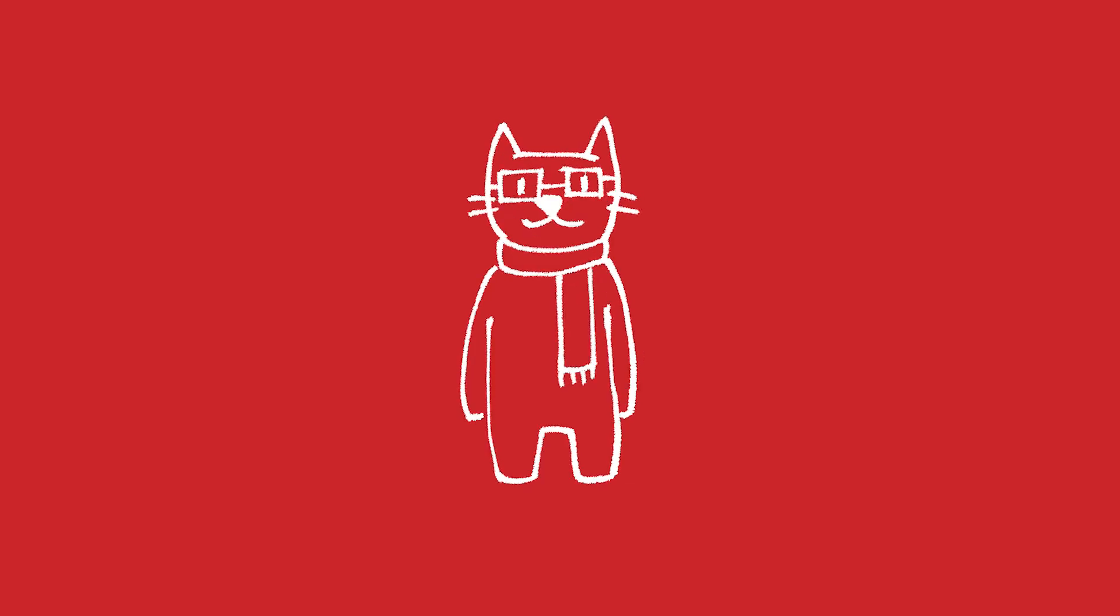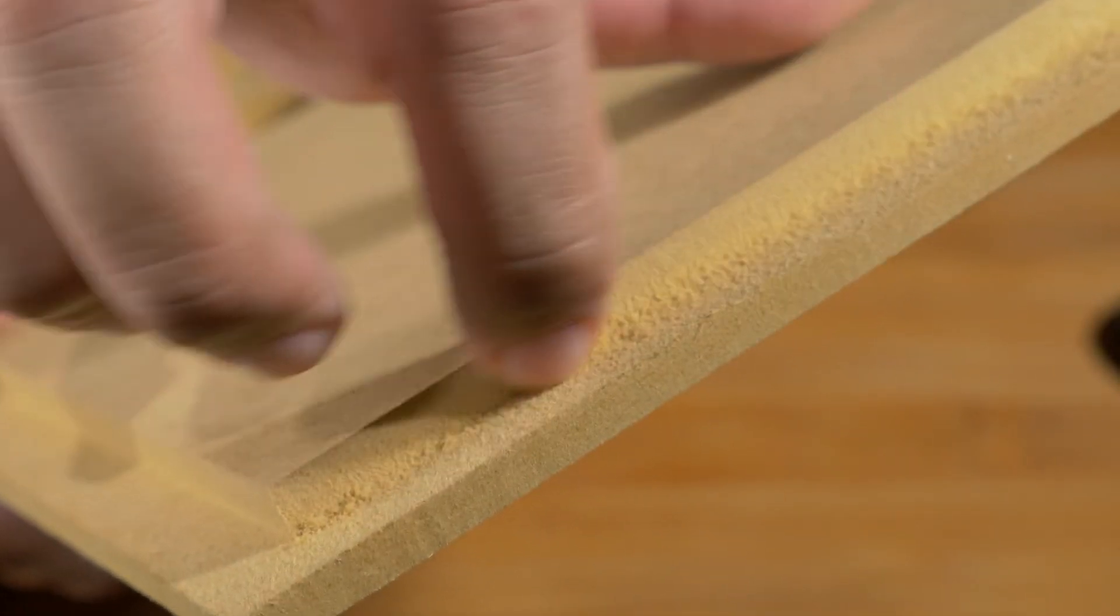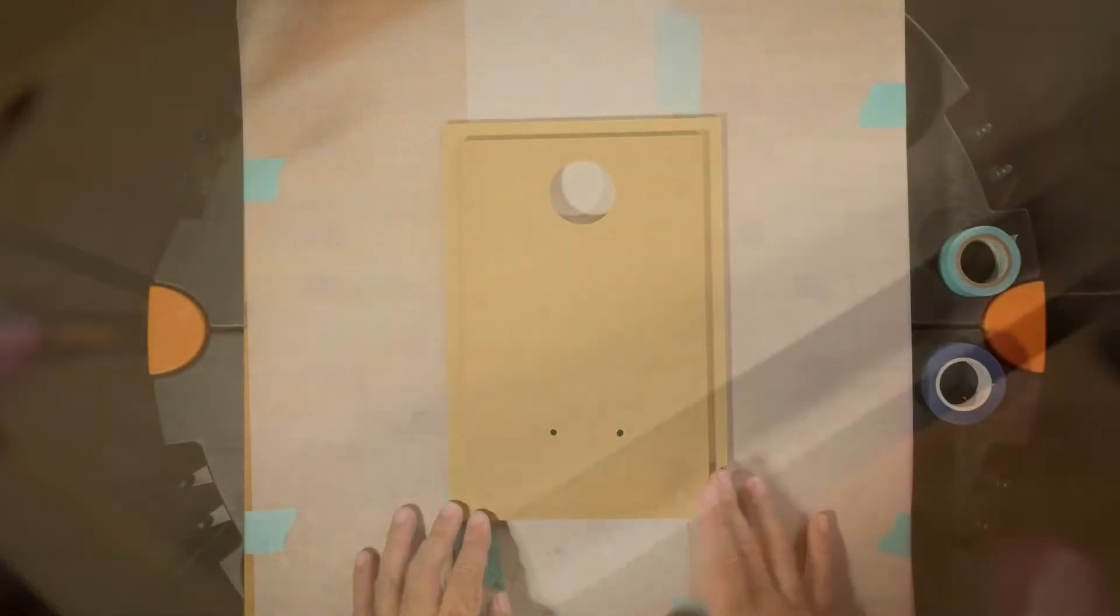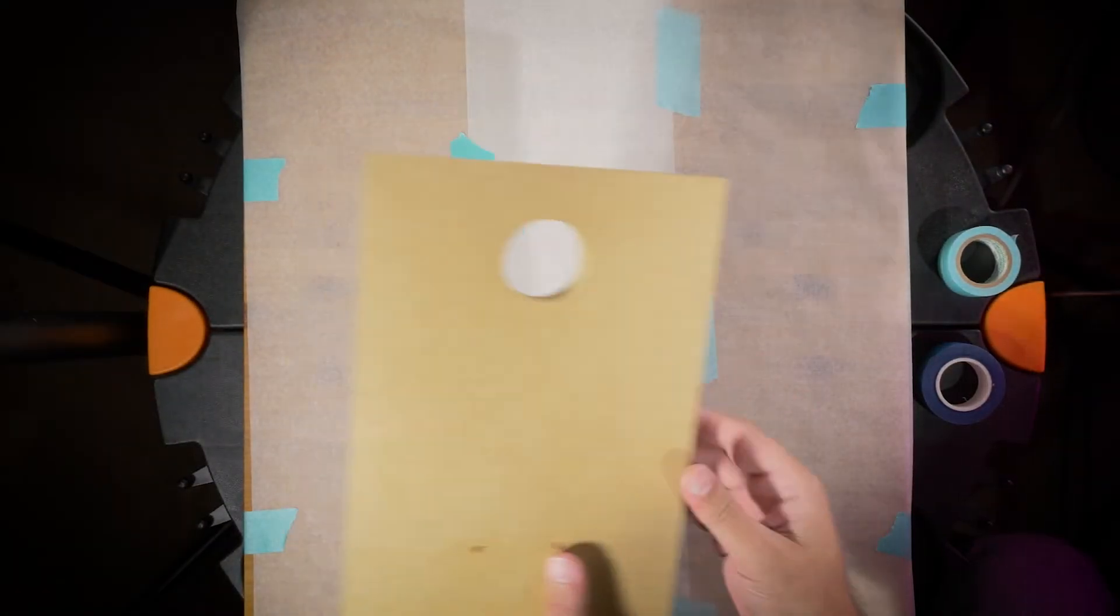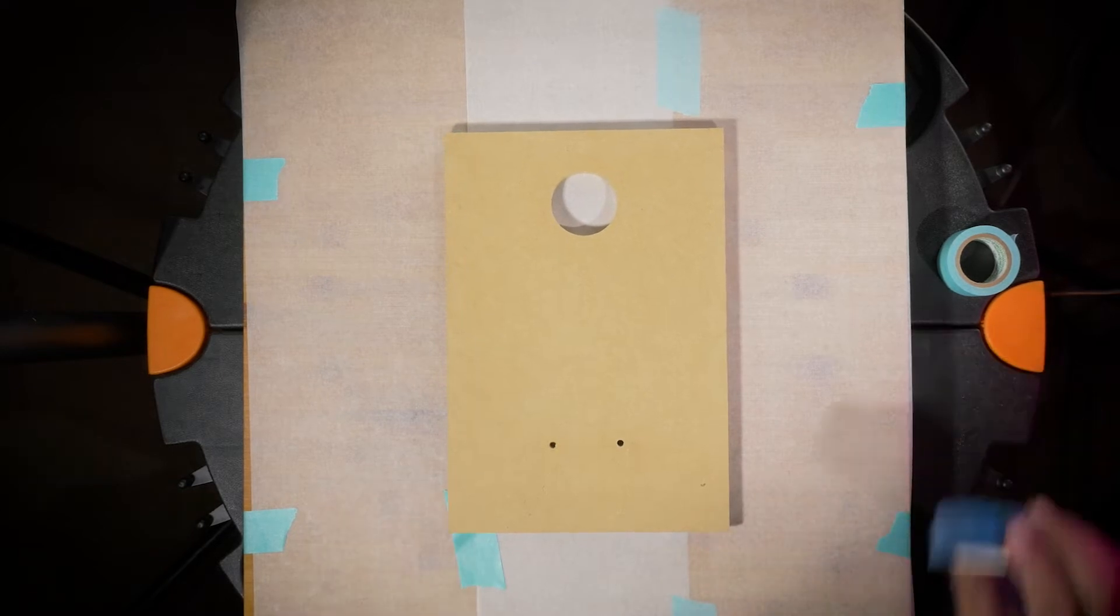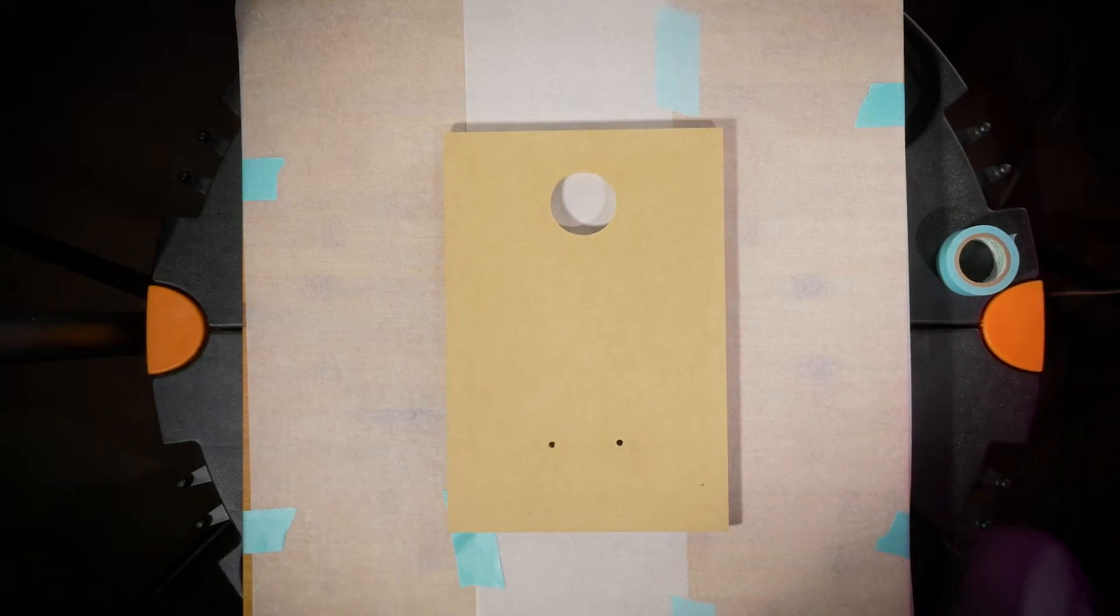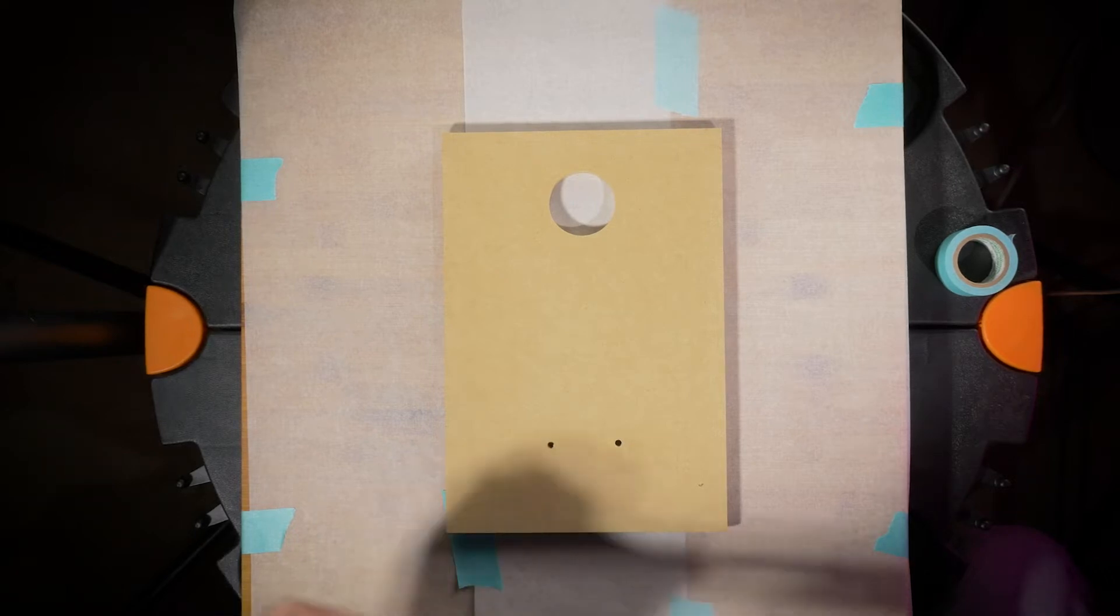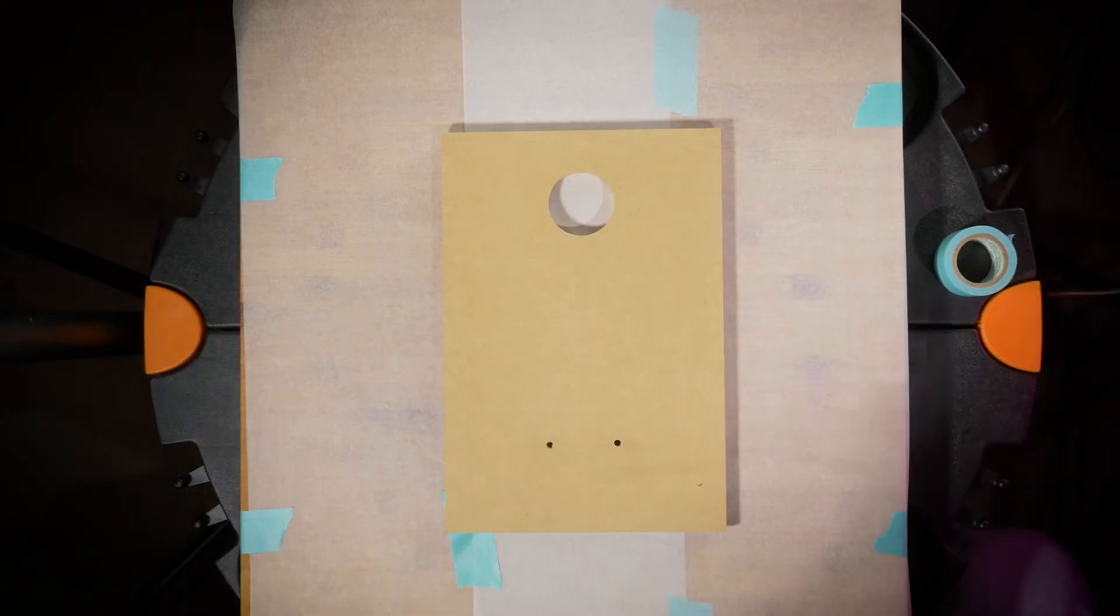This next section of the speaker build is probably, in my opinion, the most nerve wracking and that is the glue up of the cabinets themselves. The first step in this is you're going to want to make sure that all of the edges are free of dust. This part of the build is a very messy operation. There's a lot of glue involved. It's important that your workspace is nice and organized. The glue is going to get on your hands, so make sure you have some paper towels handy and just kind of get everything set up to go.